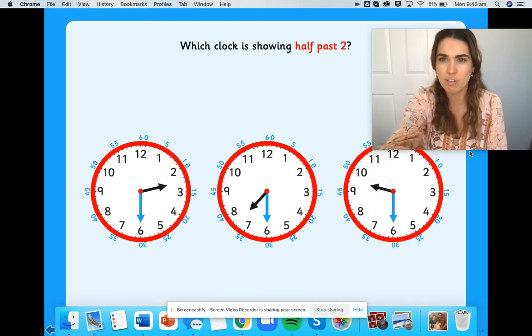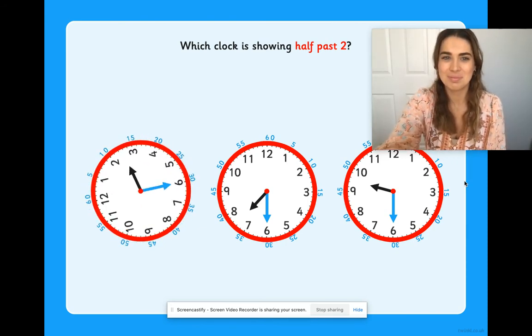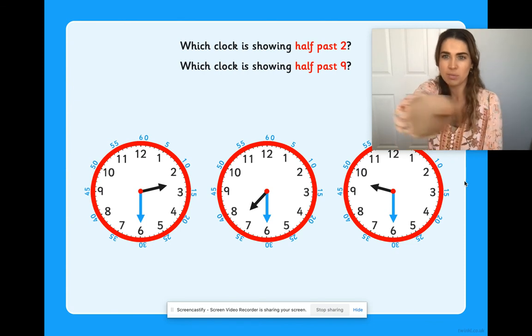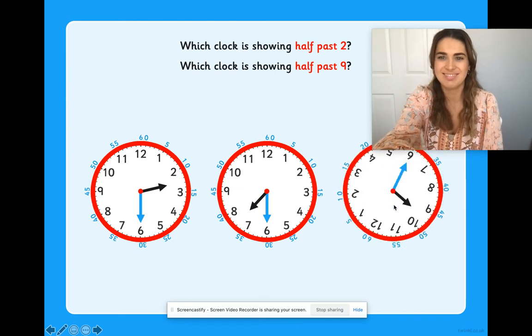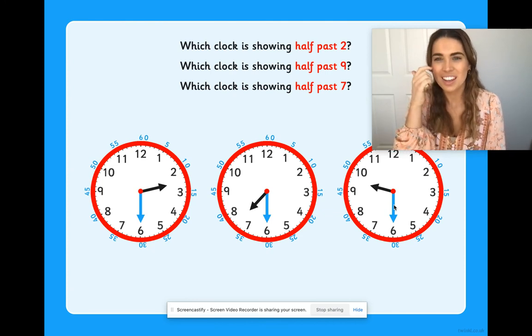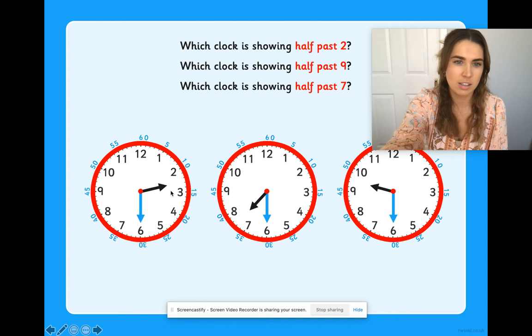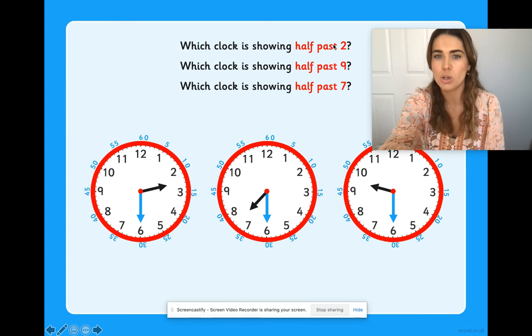Which clock is showing half past 2? Point with your fingers. Did you say that one? Which clock is showing half past 9? Point. This one, our hand's gone halfway past the 9. He's not quite at the 10. And my half past arm is pointing straight down. And last one, which clock is showing half past 7? Remember, I can also call this 7:30, 9:30, 2:30. I can call it by its minutes, or I can call it by a fraction. Half past 7? 7:30. Half past 9? 9:30. Half past 2? 2:30. All right.